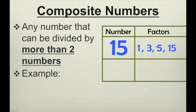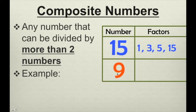Not just 1 and itself — 15 can also be divided by 3 and 5. Therefore, 15 is a composite number. How about 9? 9 can be divided by 1, 3, and 9. Therefore, 9 is also a composite number.